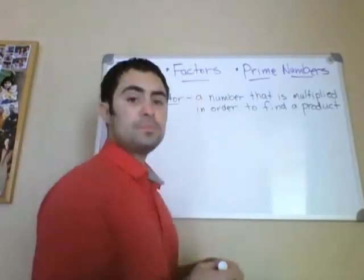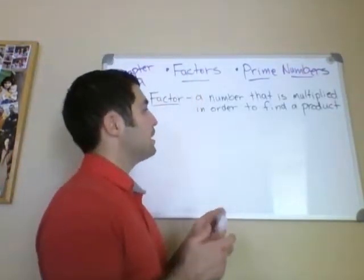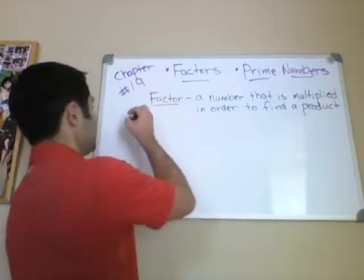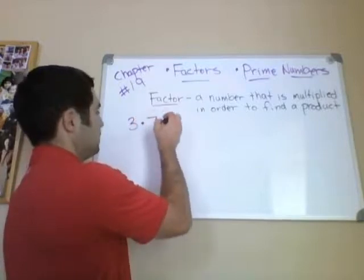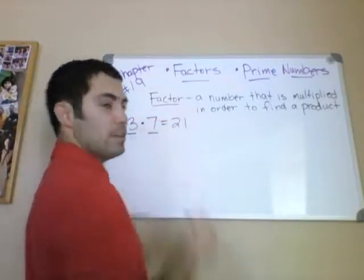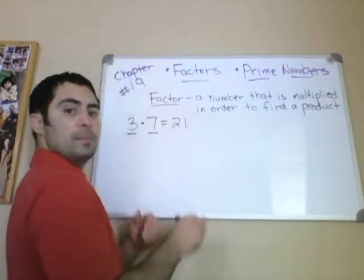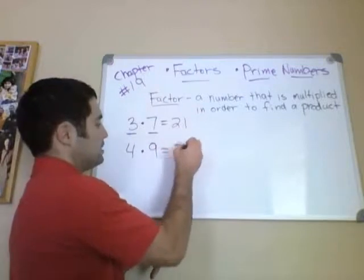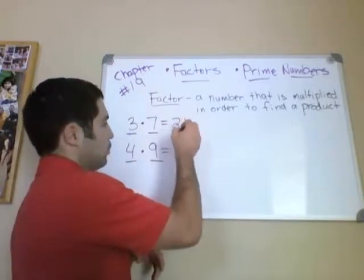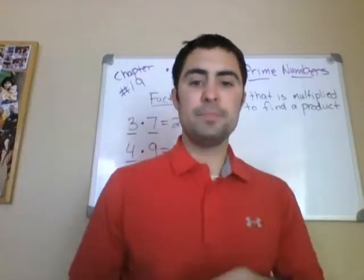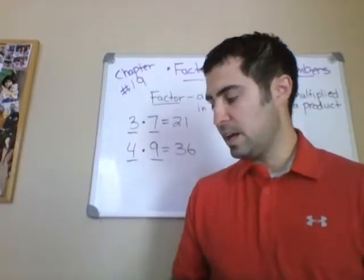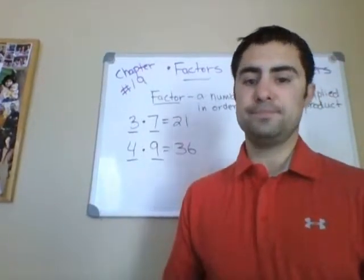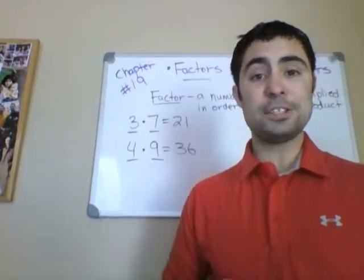So what is a factor? A factor is a number that is multiplied in order to find a product. So let's say 3 times 7 equals 21 — the 3 and the 7 are both factors. Let's do 4 times 9 is 36 — 4 and 9 are factors, and of course the answer is the product. You've got to know your factors because we're going to start talking about division and there's no way around it.